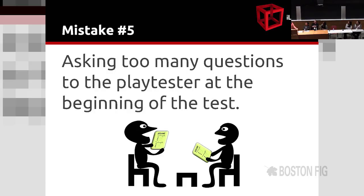Mistake number five: asking too many questions to the playtester at the beginning of the test. Imagine you are going to a test and you are asked if you are good at racing games and play them a lot, and you say yes, and then you are asked to play a racing game. You wouldn't want to look like you lied, so you're going to try to perform in the game and put much more effort in than you normally would. All questions concerning the player and their habits will normally have the same answer at the end of the test, so wait until the end to ask them — otherwise, you will skew the results.